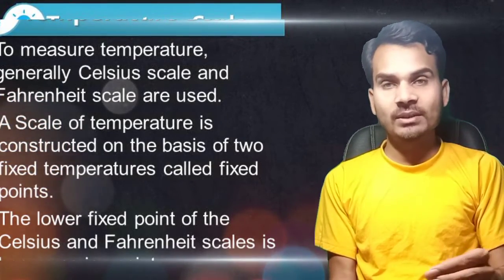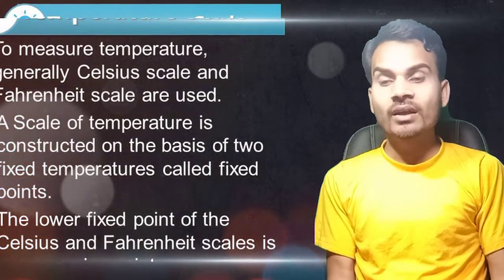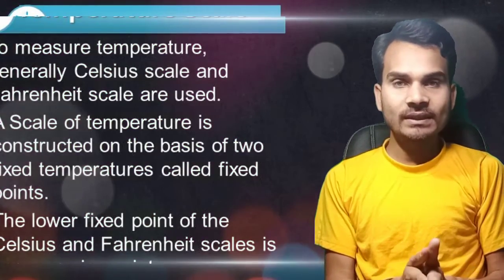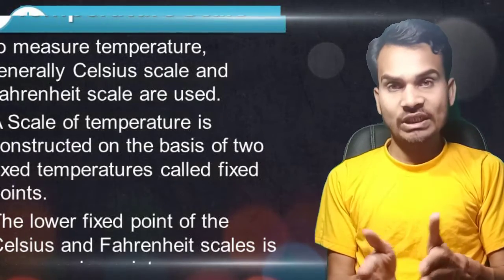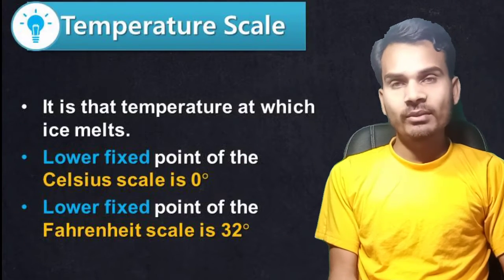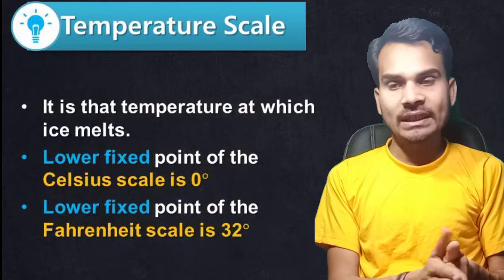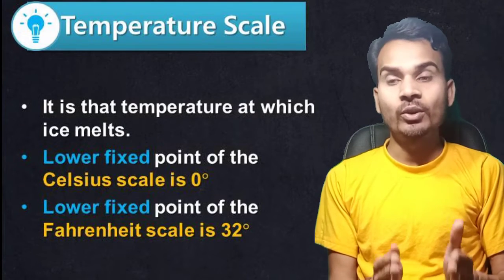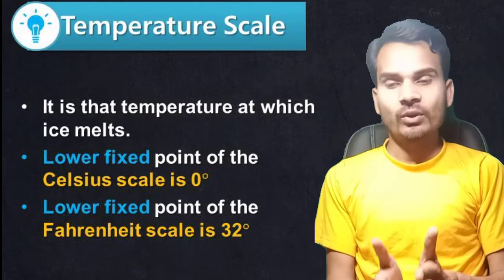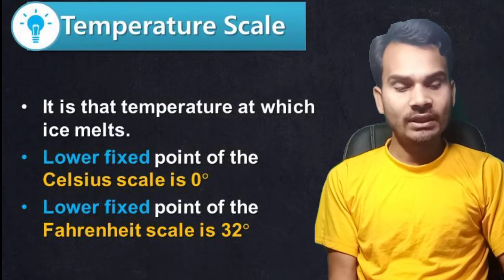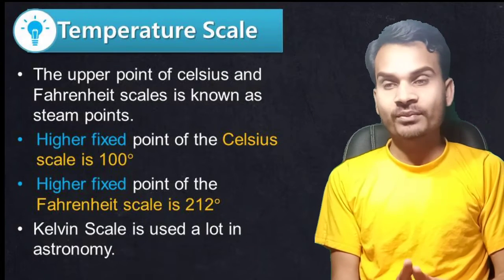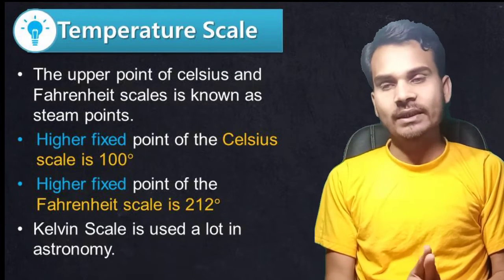The lower fixed point of the Celsius scale is 0 degrees, also known as the ice point, because it is the temperature at which ice melts. The lower fixed point of the Fahrenheit scale is 32 degrees F. The upper fixed point of the Celsius and Fahrenheit scale is known as the steam point.